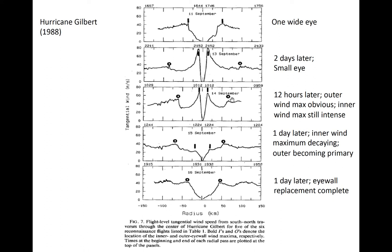Twelve hours later, a clear outer wind maximum was present at about 50 to 75 kilometers of radius. An additional day later, looking at the fourth panel, the inner eyewall had weakened. Only a small wind maximum of about 25 meters per second was present in the remnant of the inner eyewall, and the outer eyewall had become the primary wind maximum with a radius of maximum wind at 50 to 75 kilometers and a maximum wind speed of 40 to 45 meters per second.